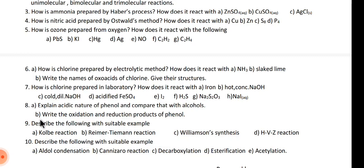Eighth one - explain acidic nature of phenol and compare with that of alcohol. Oxidation and reduction products of phenol. This one is 12.1 - alcohols, phenols and ethers. Ninth question - describe the following with suitable example: Kolbe reaction, Reimer-Tiemann reaction, Williamson synthesis, and HVZ reaction. Tenth question - describe the following with suitable example: aldol condensation, Cannizzaro reaction, decarboxylation, esterification, and acylation. Students, these are important essays. You have to prepare these answers.